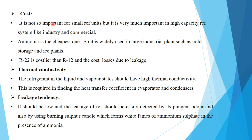Ammonia is the cheapest one, so it is widely used in large industry plants such as cold storage and ice plants.